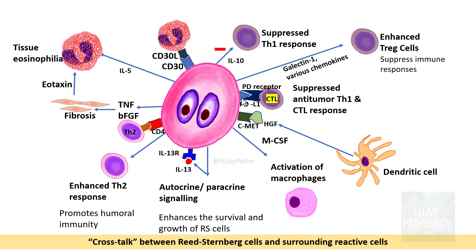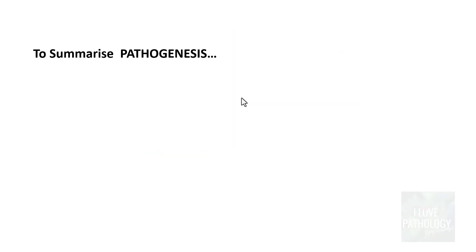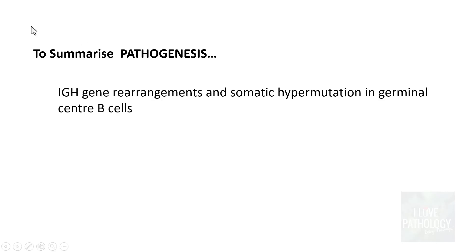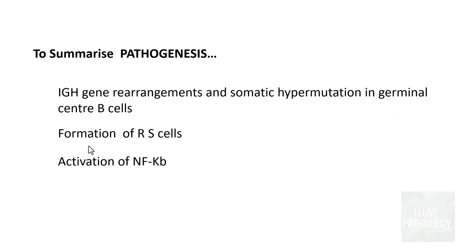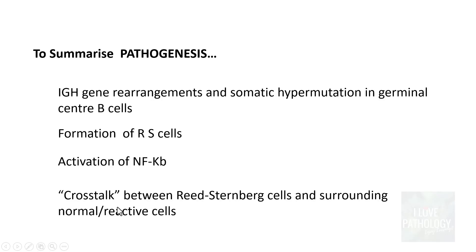To summarize what we studied: first and foremost, there is immunoglobulin heavy chain (IgH) gene rearrangement and somatic hypermutation in germinal center B cells, which leads to the formation of Reed-Sternberg cells. In these Reed-Sternberg cells there is activation of Nuclear Factor Kappa B (NF-κB), and finally there is cross-talk between the Reed-Sternberg cells and the surrounding normal reactive cells. This is the pathogenetic mechanism of Hodgkin Lymphoma.